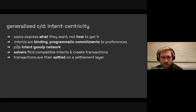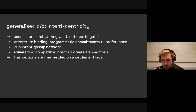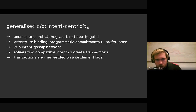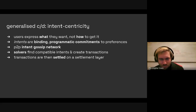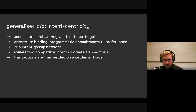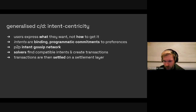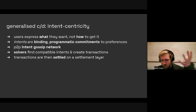In counterparty discovery, instead of crafting transactions, users craft what we call intents. Intents are binding programmatic commitments to preferences — roughly synonymous with partial transactions, which look something like 'I have A and I want B.' We have a peer-to-peer gossip network for these intents — think of it as a mempool but for the stage prior to transactions. A normal transaction mempool gossips transactions between validators and full nodes; those transactions are already valid.